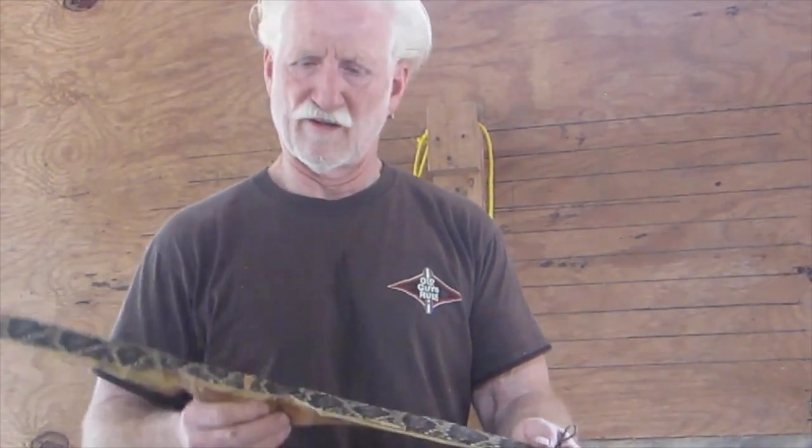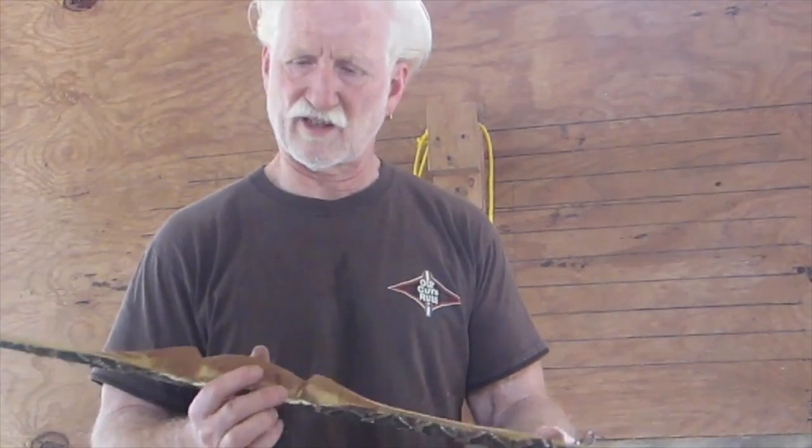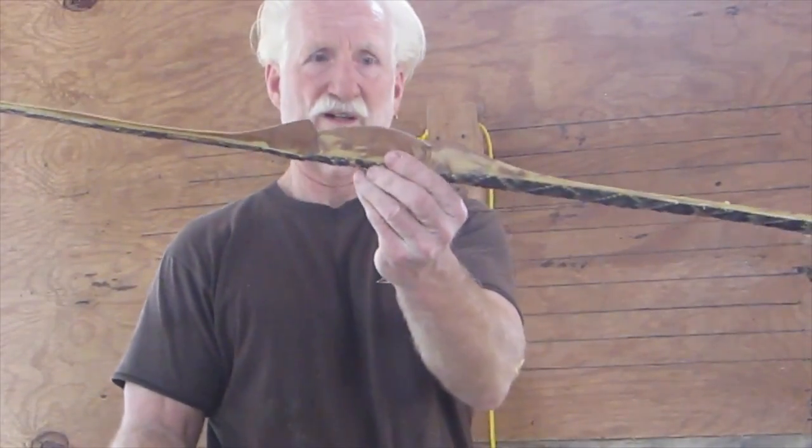So anyway, there you have it. It's pretty much the sum total of tillering out a bow. Got to put a nice leather handle on it. What's cool about a self bow is that you can actually decide which side you like top and which side you like bottom. It doesn't matter. You can shoot it either way. Right hand, left hand, top or bottom.